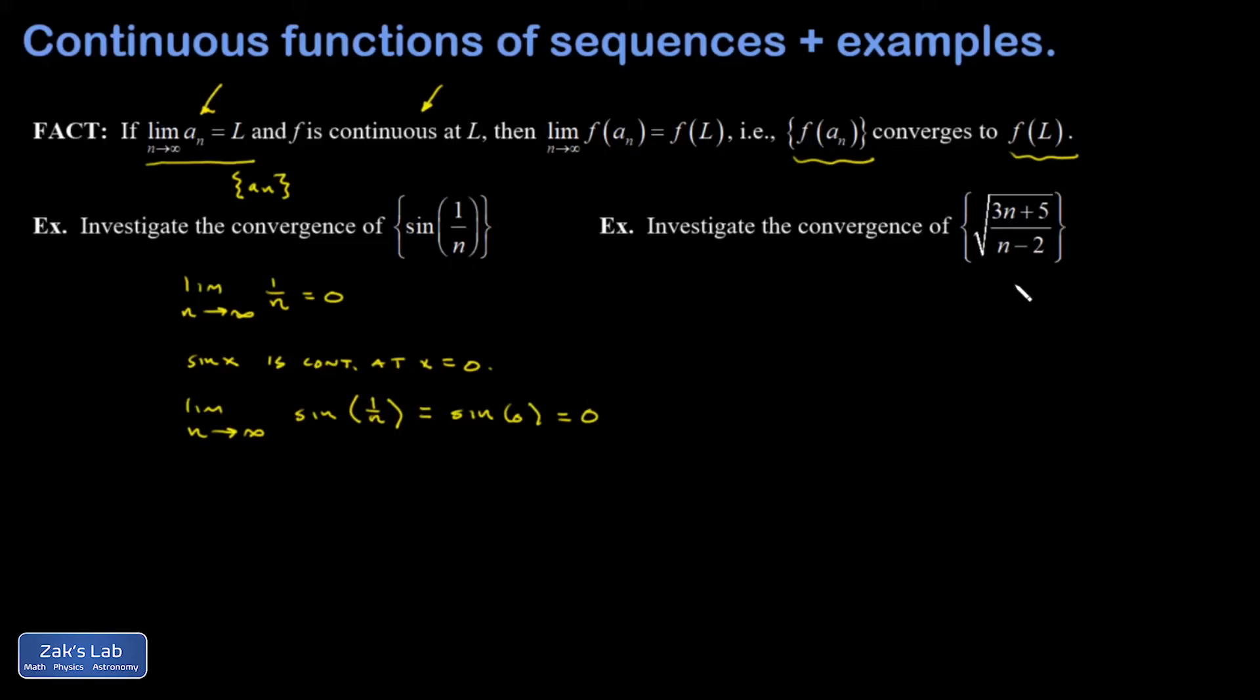Let's look at another example. The outer function here is the square root function, which is going to be continuous just about everywhere. You wouldn't want to butt up against x equals zero with it. And again, I'm going to look at the limit as n goes to infinity of the interior pieces. So 3n plus 5, all divided by n minus 2.